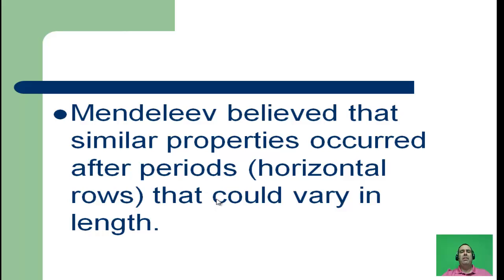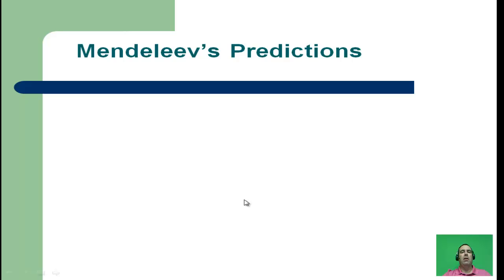Mendeleev believed that similar properties—both physical and chemical—occurred after periods. Periods are your horizontal rows, and he said that they could vary in length. We had some earlier scientists that tried to go six elements across and then start a new line. When you look at our periodic table, you notice that there's spaces in between. Sometimes it's two elements, sometimes eight elements, sometimes 18 elements in length. Mendeleev was the first scientist to say that those rows could vary in length.